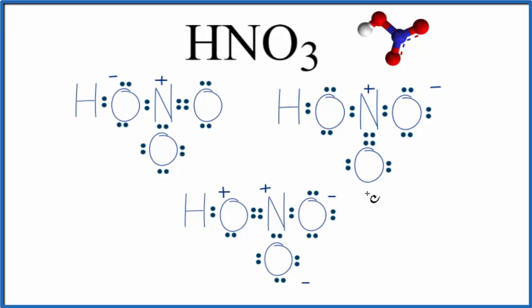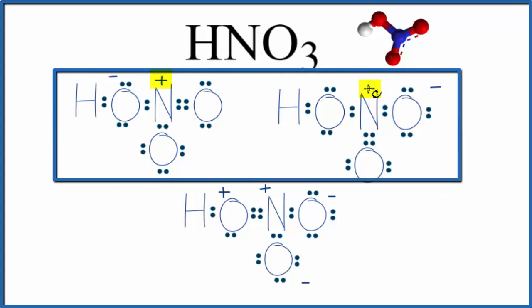When we look at the formal charges, we want them to be as close to zero as possible. In these two structures, we have a plus and a minus, and it makes sense the negative charge is on the more electronegative oxygen.